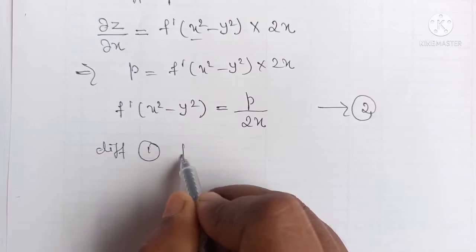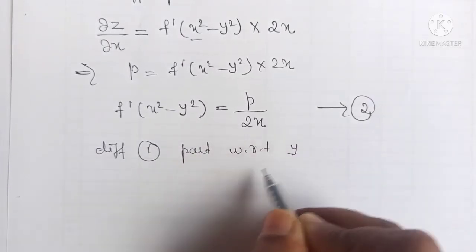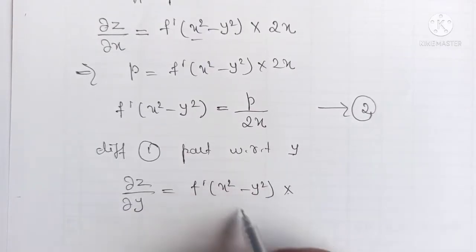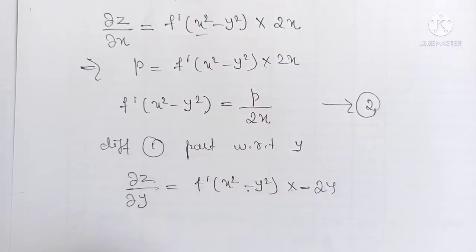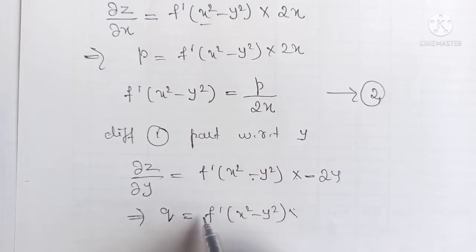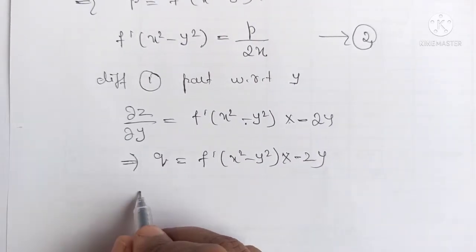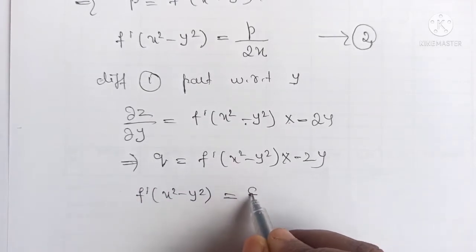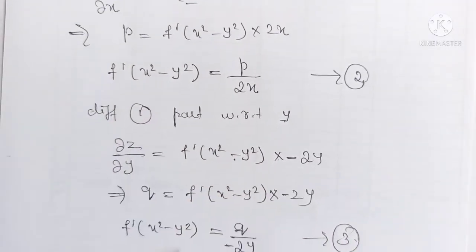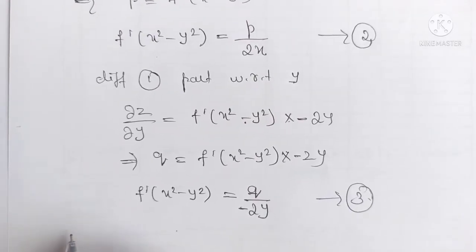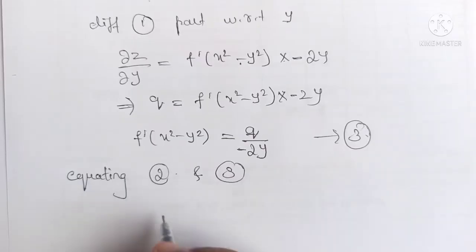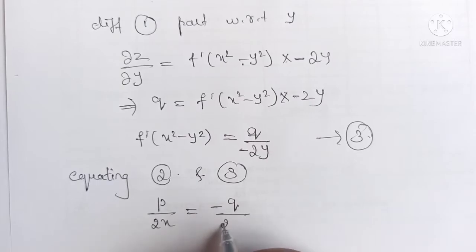Now differentiating equation 1 partially with respect to y, we get dou z by dou y equals f dash of (x² − y²) into minus 2y, which gives q equals f dash of (x² − y²) into minus 2y. So f dash of (x² − y²) equals q divided by minus 2y — consider this as equation 3. From equations 2 and 3 the LHS is the same, so equating the RHS: p divided by 2x equals minus q divided by 2y.